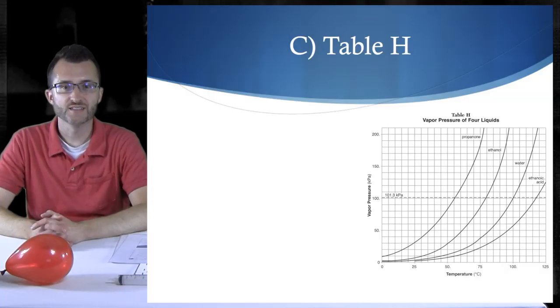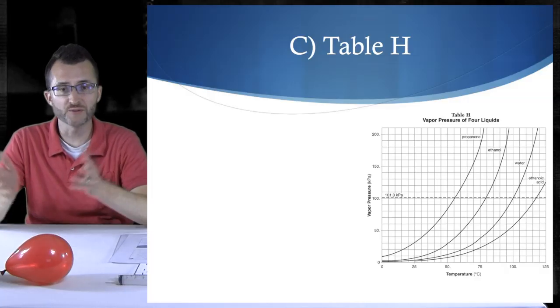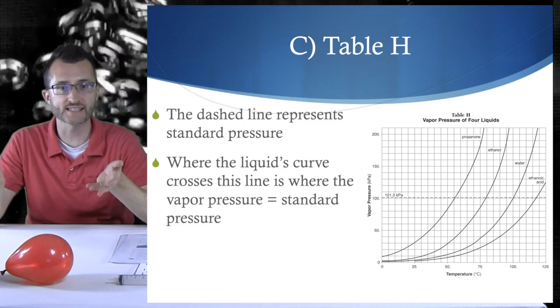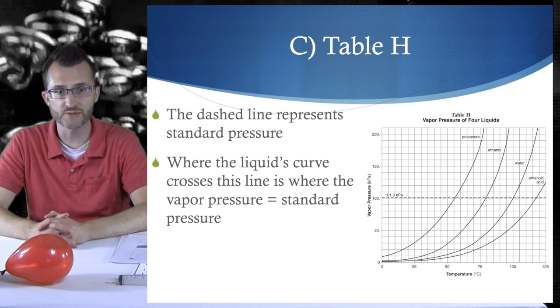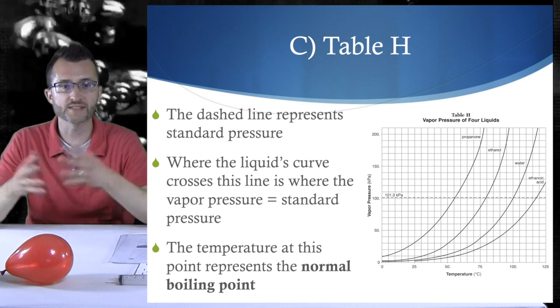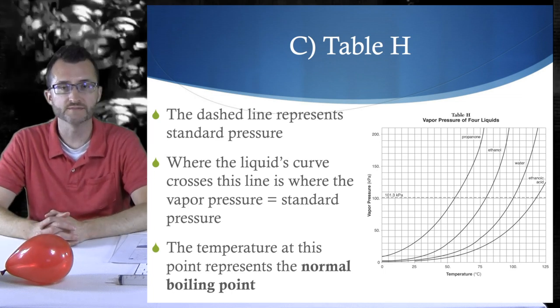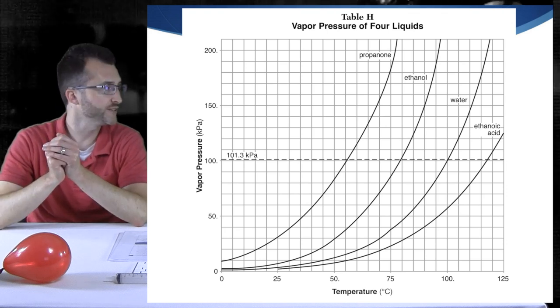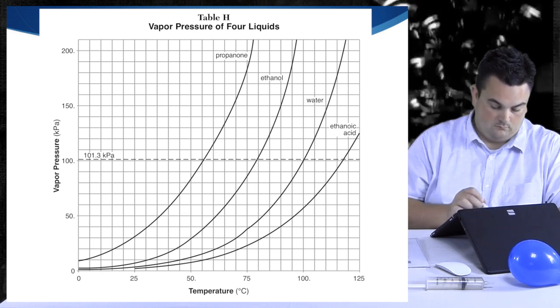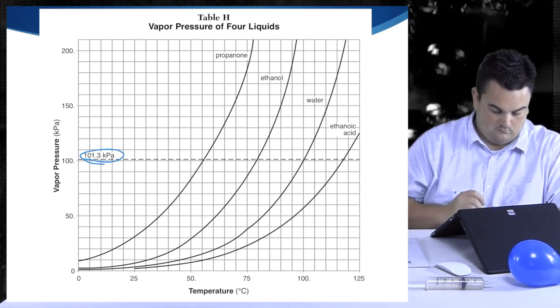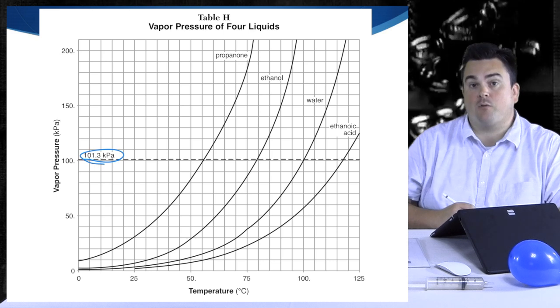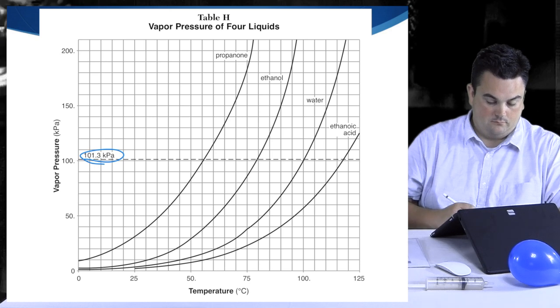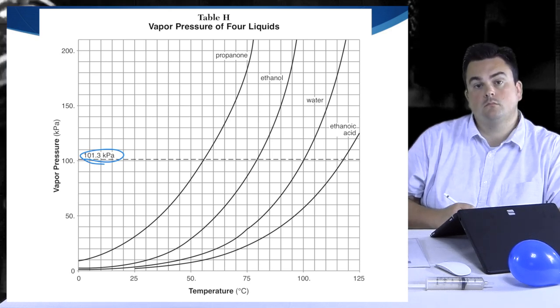Let's return to table H. One of the things we didn't mention before was the dashed line. The dashed line represents standard pressure. So where the liquid's curve crosses this line, that's where the vapor pressure equals the standard pressure. So the temperature at this point represents the normal boiling point. Okay, we're going to dig a little bit deeper into table H vapor pressure of four liquids. You ready Fu? Let's do it. All right, let's circle that 101.3 kPa. Now Fu, what does that represent? That is standard pressure according to table A. All right, very good. It is standard pressure. So wherever the vapor pressure equals standard pressure is where we have our normal boiling point.